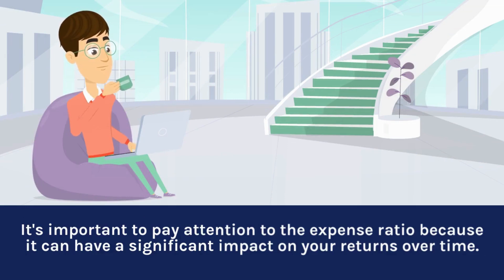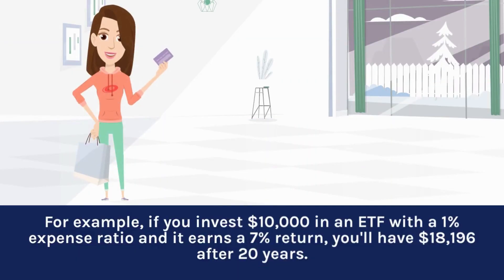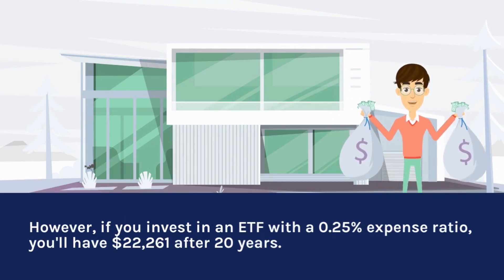For example, if you invest $10,000 in an ETF with a 1% expense ratio and it earns a 7% return, you'll have $18,196 after 20 years. However, if you invest in an ETF with a 0.25% expense ratio, you'll have $22,261 after 20 years.